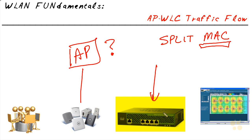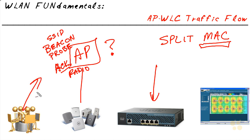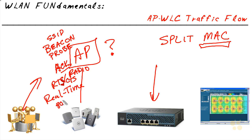The access point asks: what do I have to do? The controller says: you need to run your radio and process the signals being sent back and forth. If you get a frame of data, send the acknowledgement that's so important in 802.11. Any real-time, immediate traffic, you handle. The AP would still send beacons to advertise the SSID, respond to probes, and handle RTS/CTS if used — any real-time 802.11-related traffic.